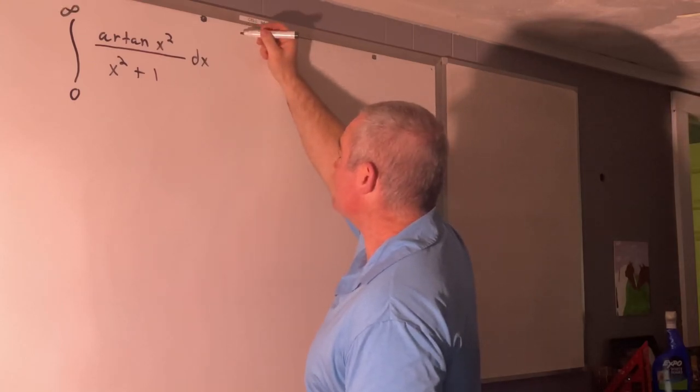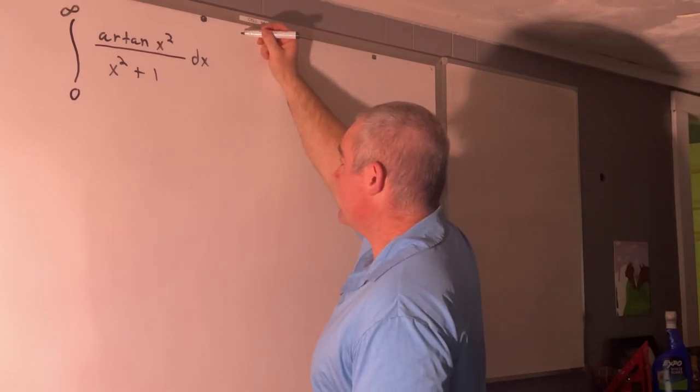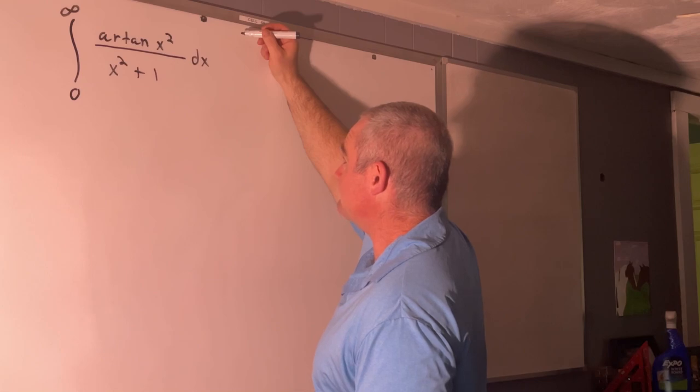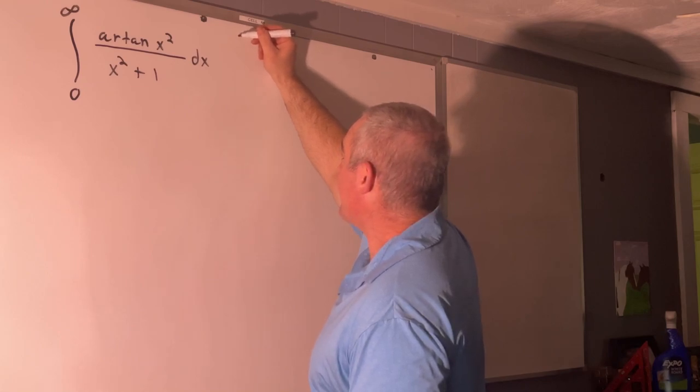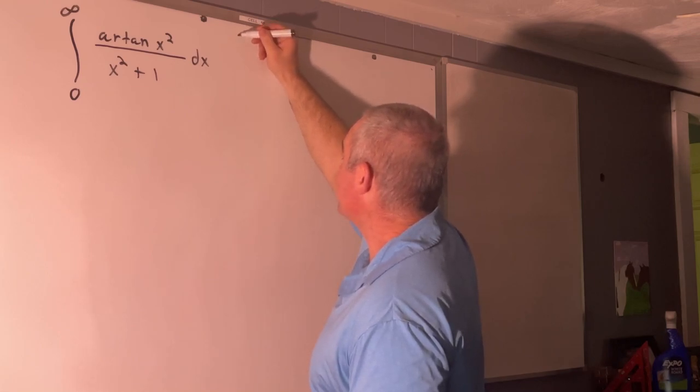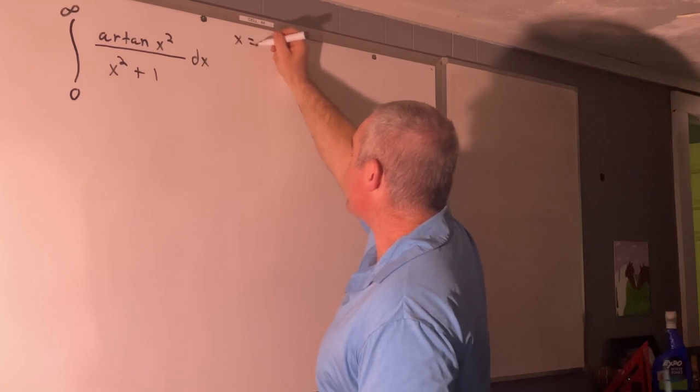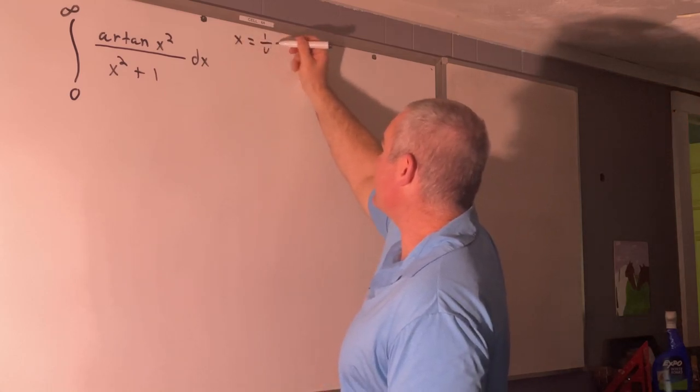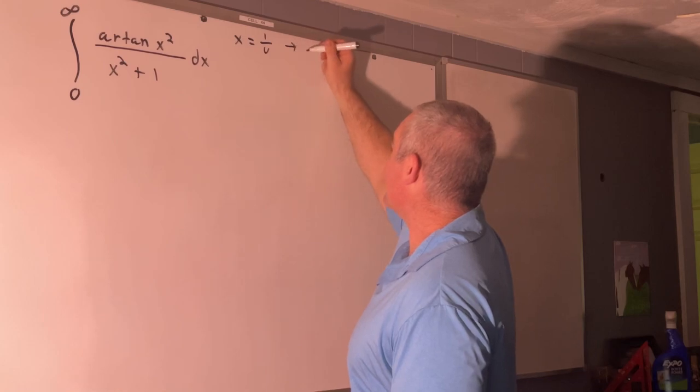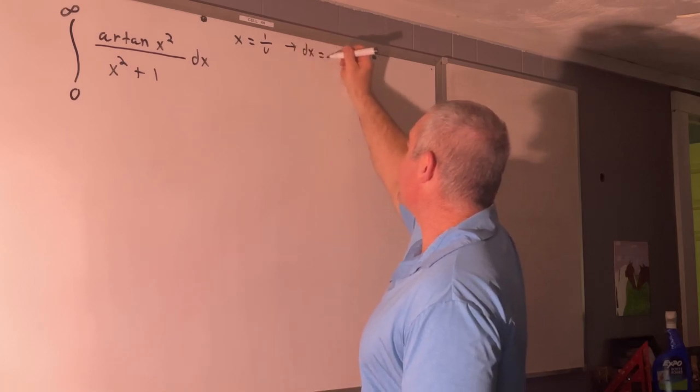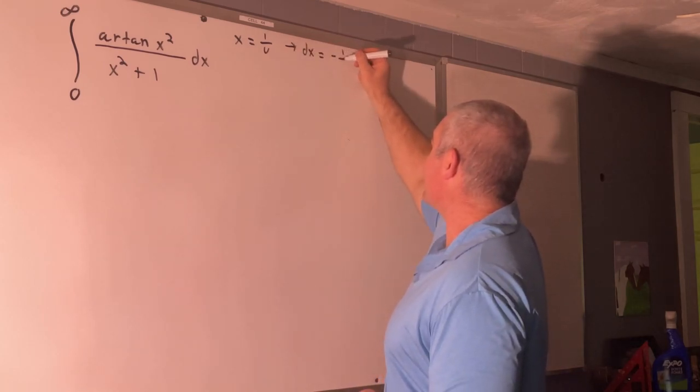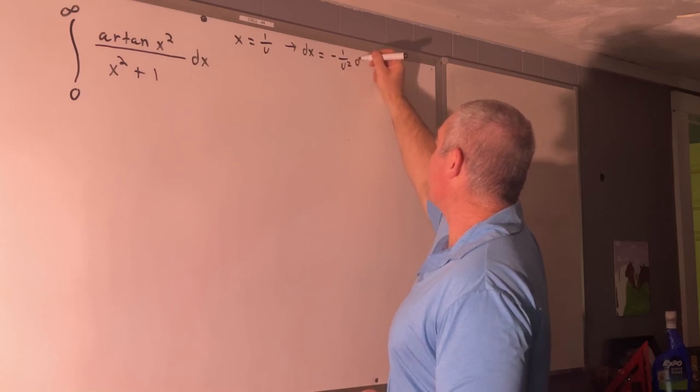First thing we're going to do is let x equal 1 over u, which implies that dx is equal to negative 1 over u squared du.